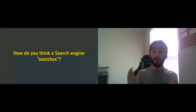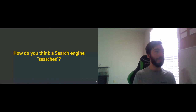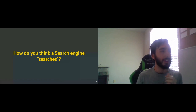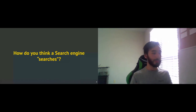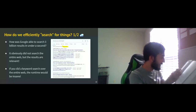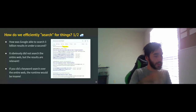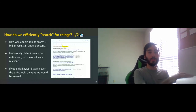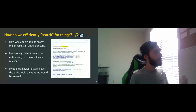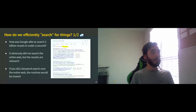Before we even begin searching, how do we efficiently search for something? Google looked over 3 billion results in under a second — that's an insane amount. If I have a big book and I'm trying to find things, I'm not going to look through every page and every single word. That wouldn't be efficient. So how do search engines overcome this problem? We use something called an inverted index.